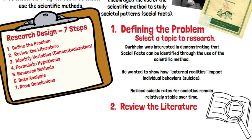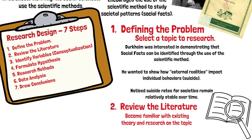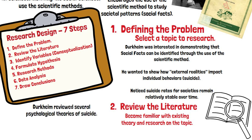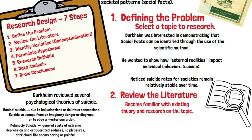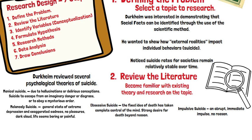The scientific method requires a researcher to become familiar with the existing theory and research on the topic. We refer to this as reviewing the literature. Research is built on prior knowledge. Durkheim reviewed several psychological theories of suicide, and he also reviewed biological theories and what he referred to as cosmic theories.